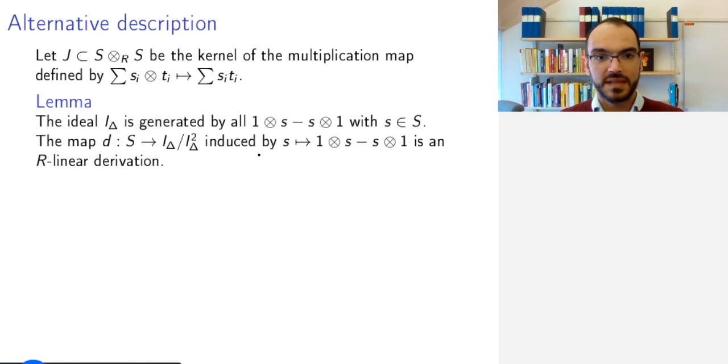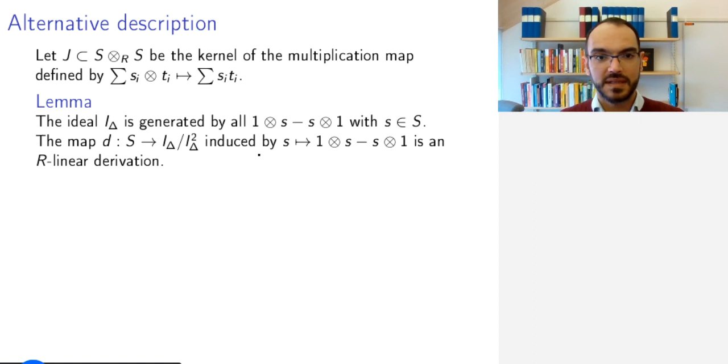Then the map that sends an element s to 1⊗s - s⊗1 in the ideal—well, this is a map from S to this ideal I_Δ. By composing it with the quotient projection with respect to the square of the ideal, I can show that this is an R-linear derivation.